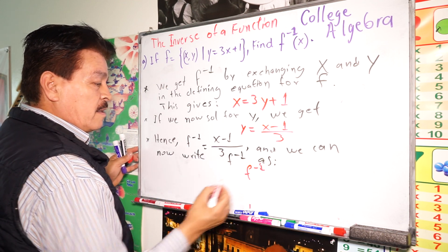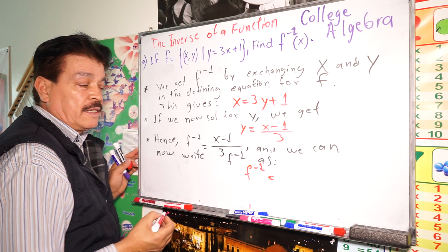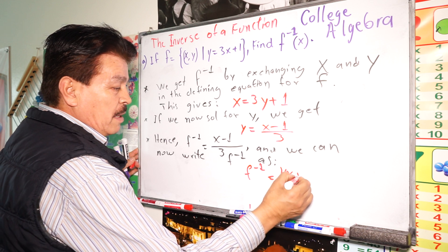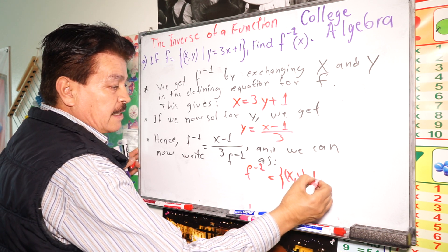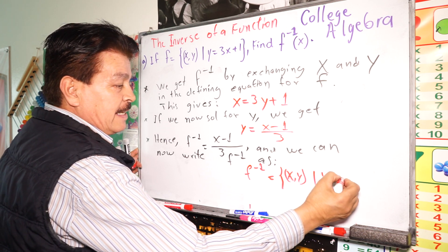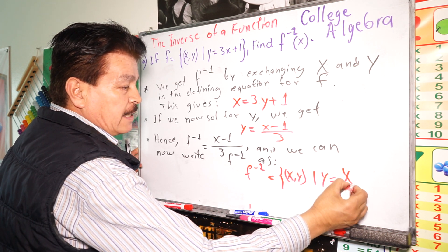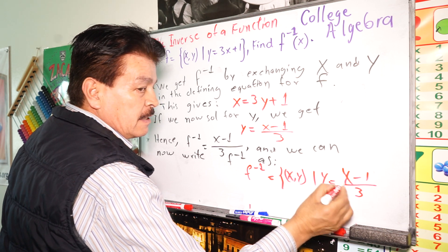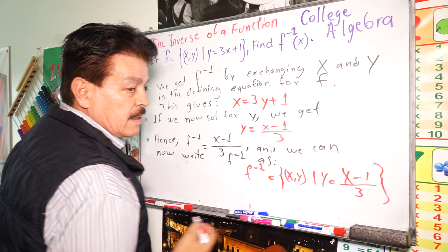f to the negative one power is, I mean, f inverse, like this: x comma y such that y equals x minus 1 divided by 3.